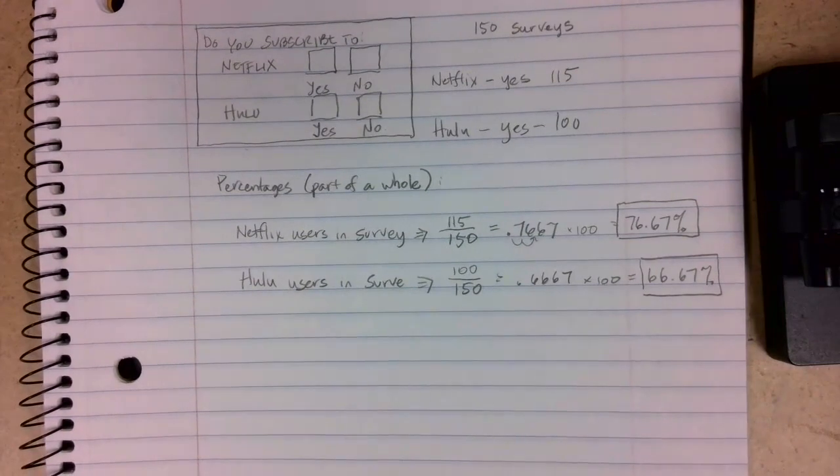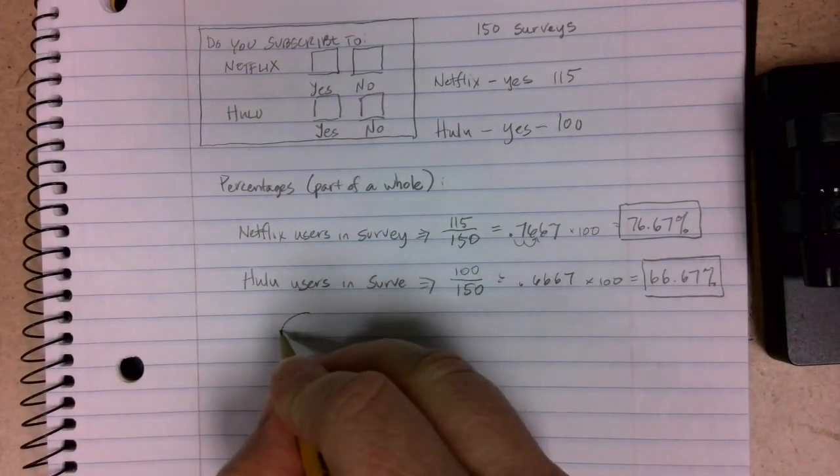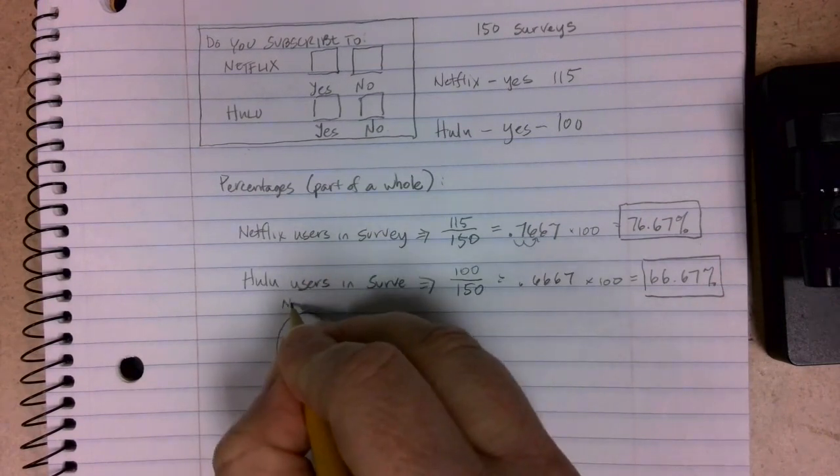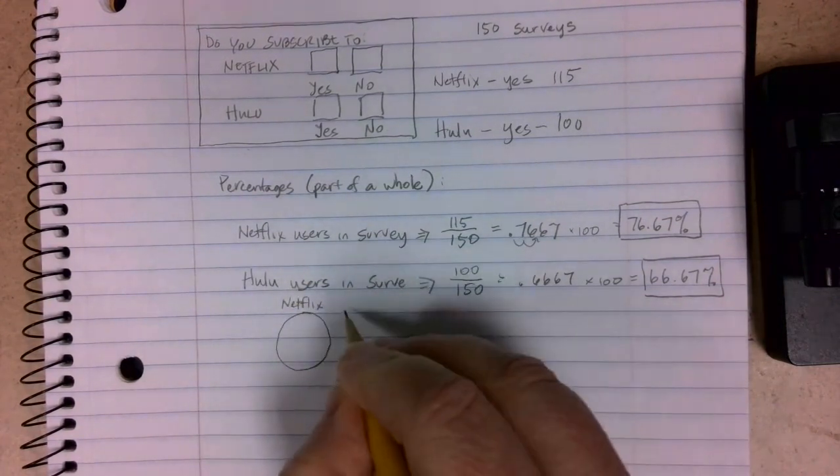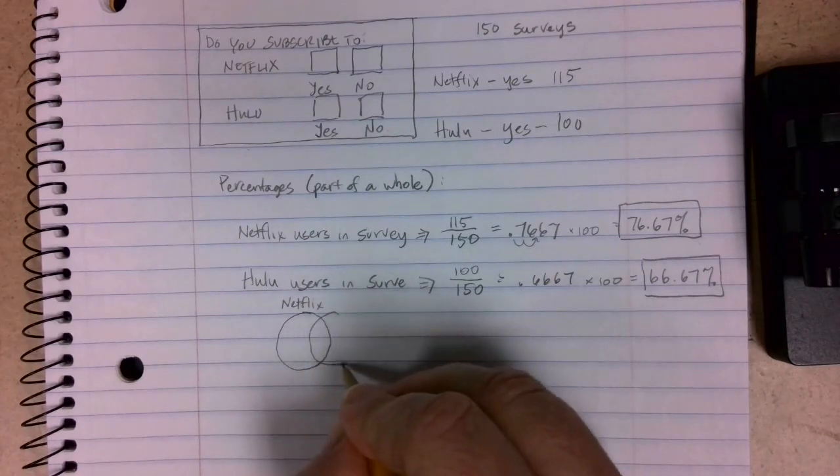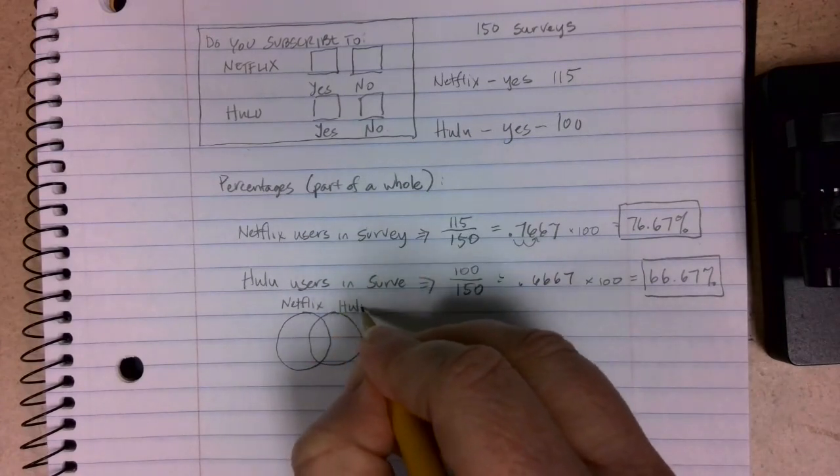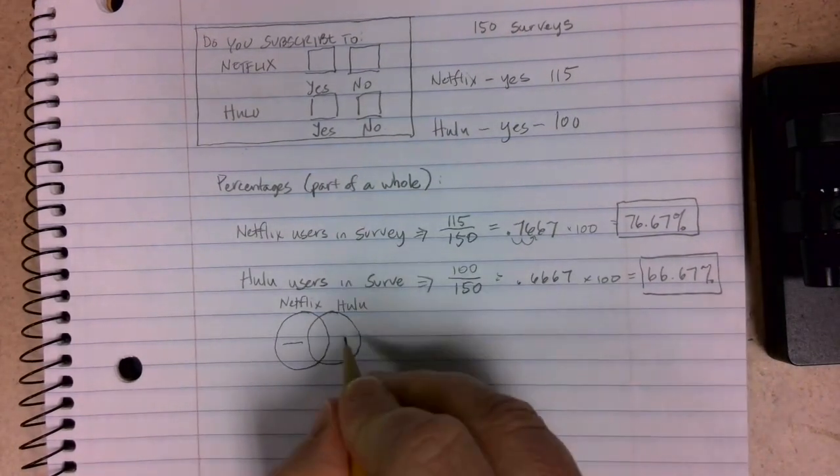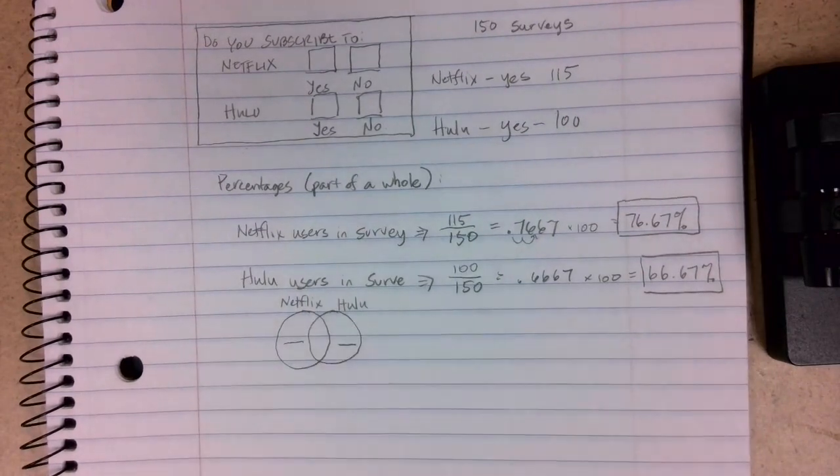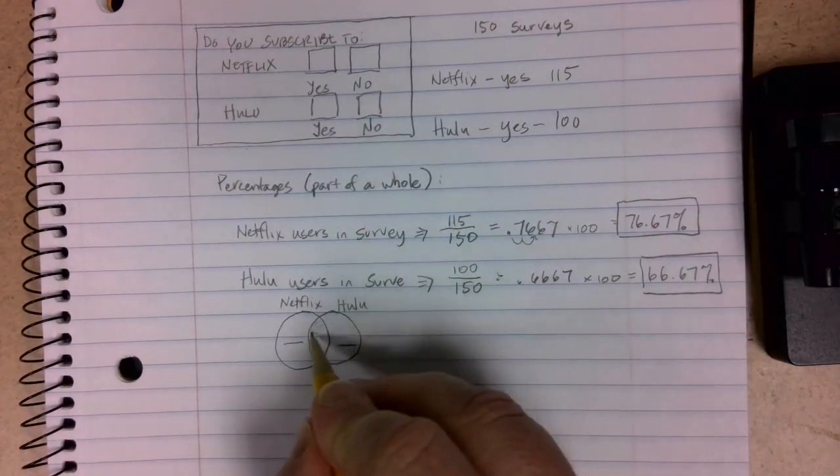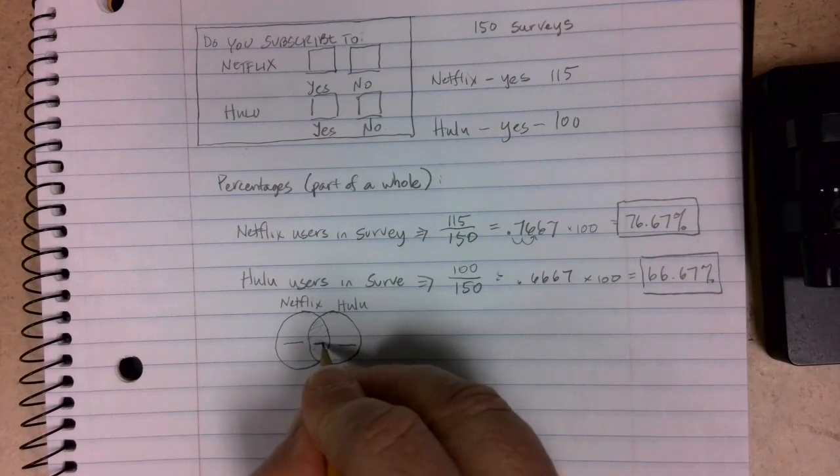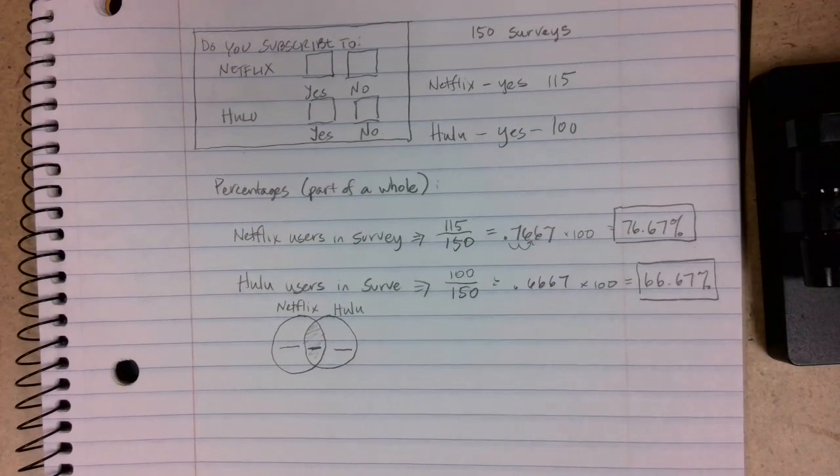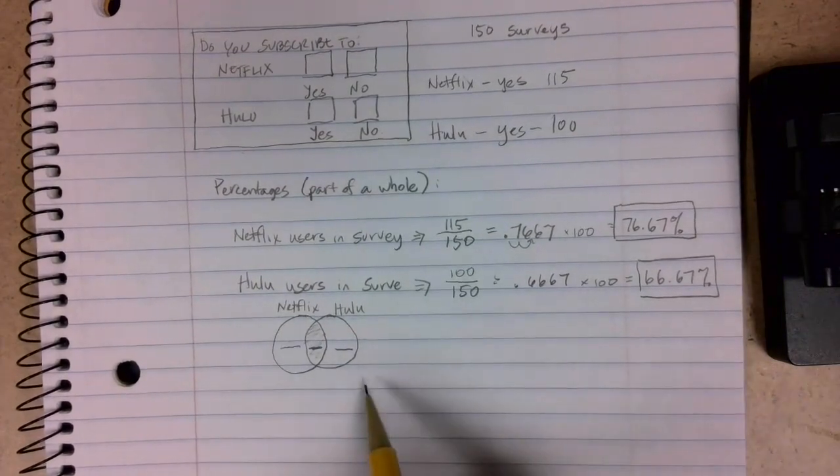One picture way that you might be able to think about how this looks would be to draw a diagram like this. In this circle, I'm going to have all of my people that use Netflix. And in this circle, I'm going to have all of my people that use Hulu. I have some people here that are Netflix only users, some that are Hulu only users, and in this section in the middle here, I'll have people that are actually subscribers to both. Now, based on the information that I have so far, I can't really separate things out like this.